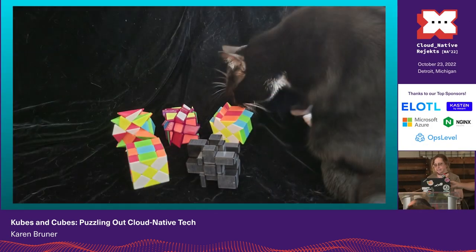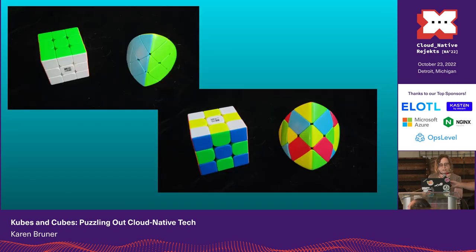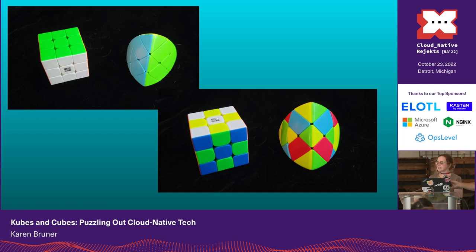This is my cat sniffing — she's very helpful. So these are also interesting: you have a standard cube, and the thing next to it is also a cube, not a physical cube shape, but it solves the same way. You use the same set of algorithms. We'll call that maybe an OpenShift cluster.